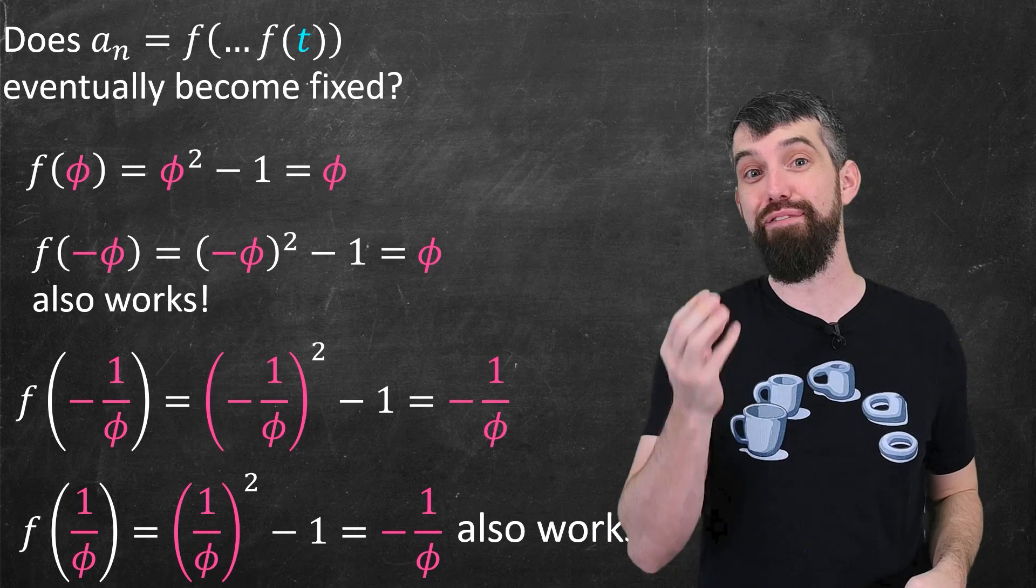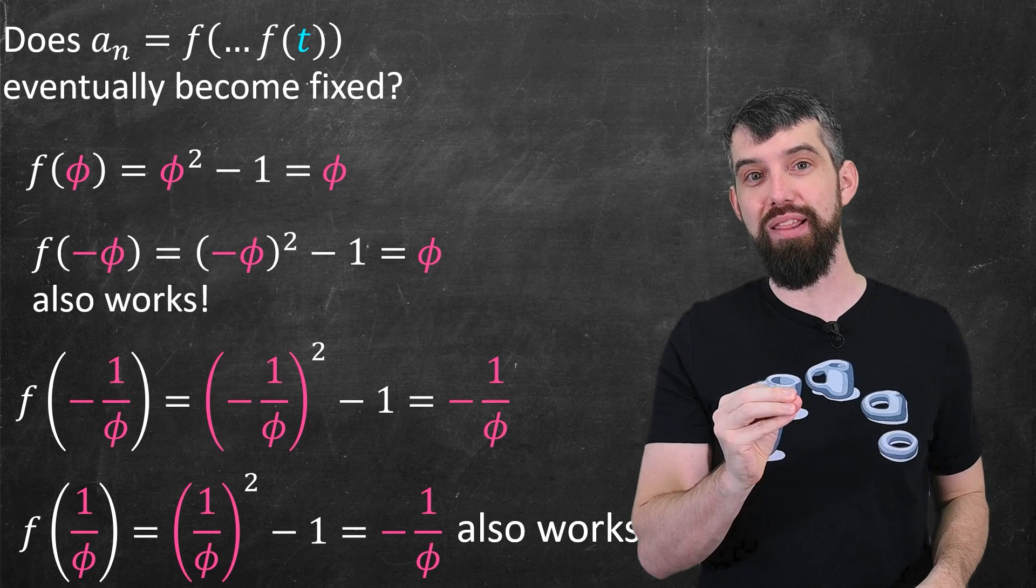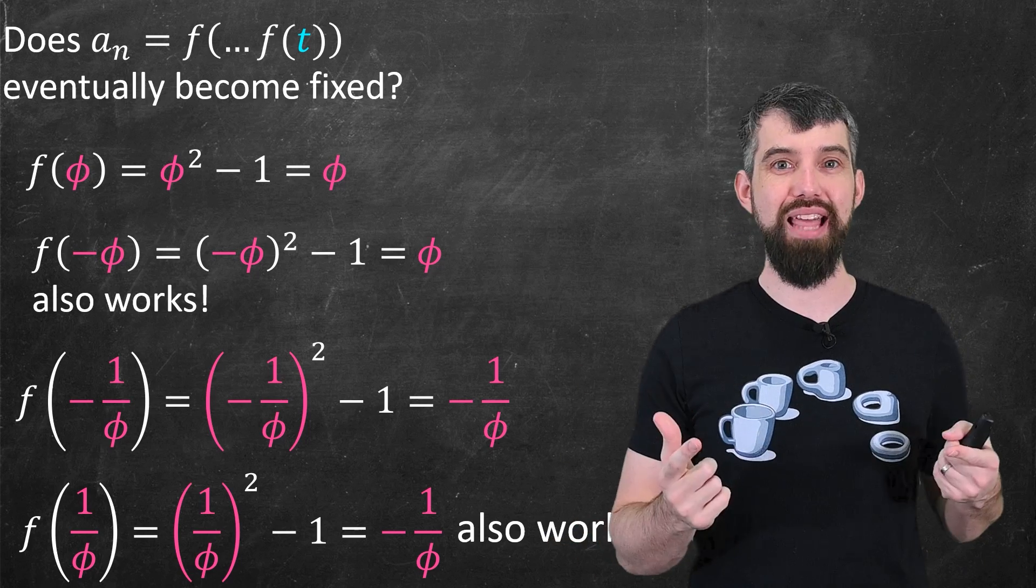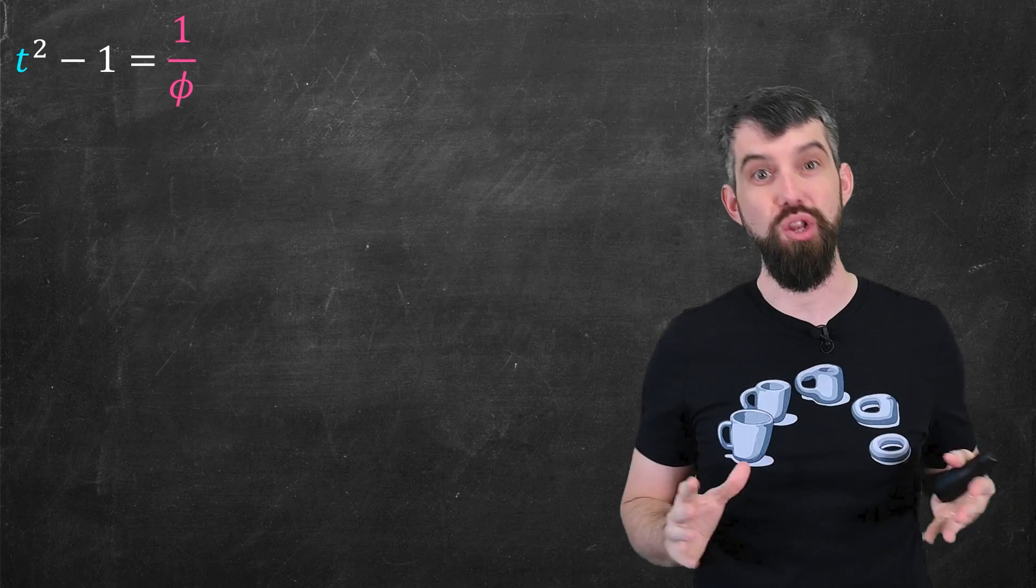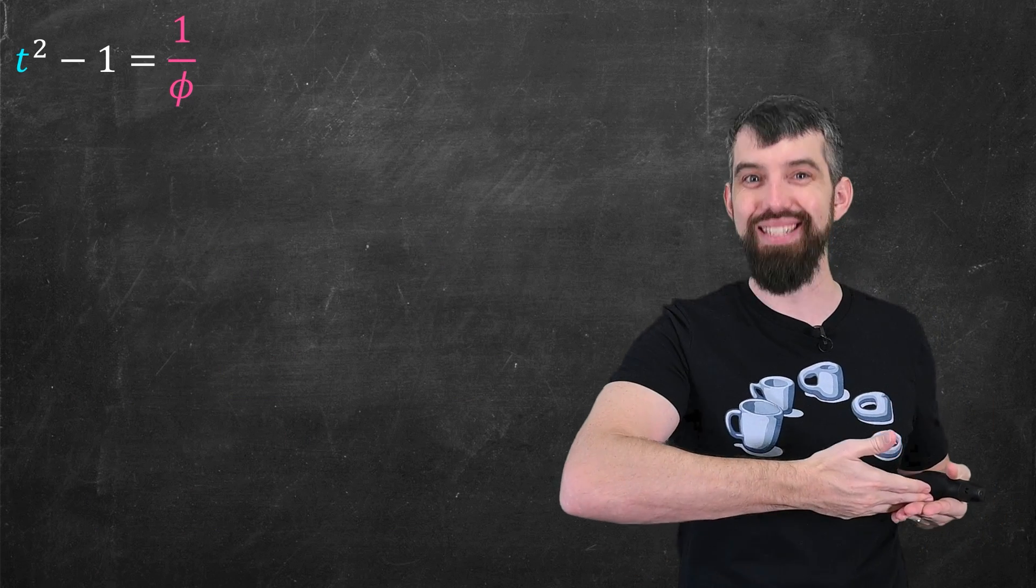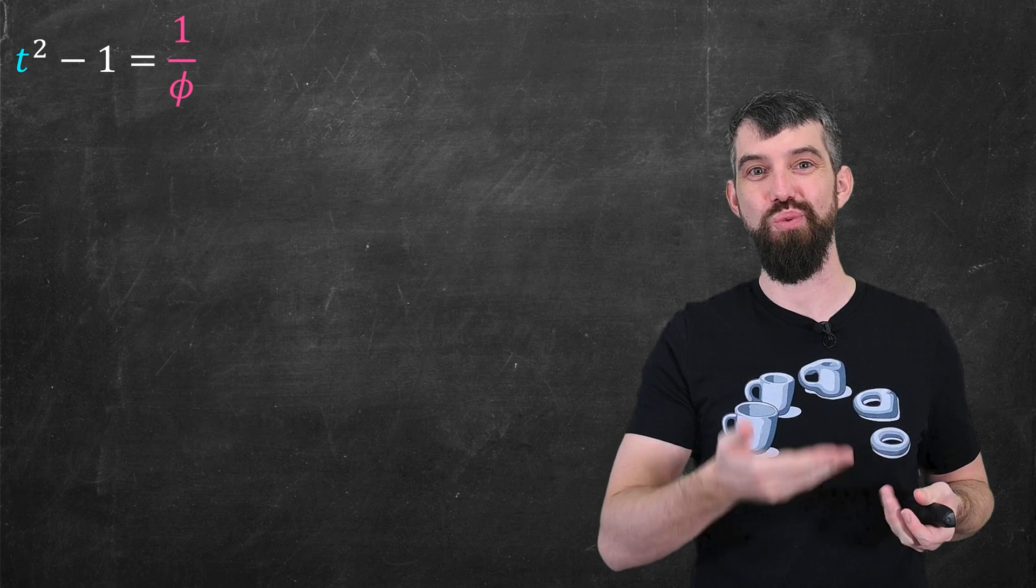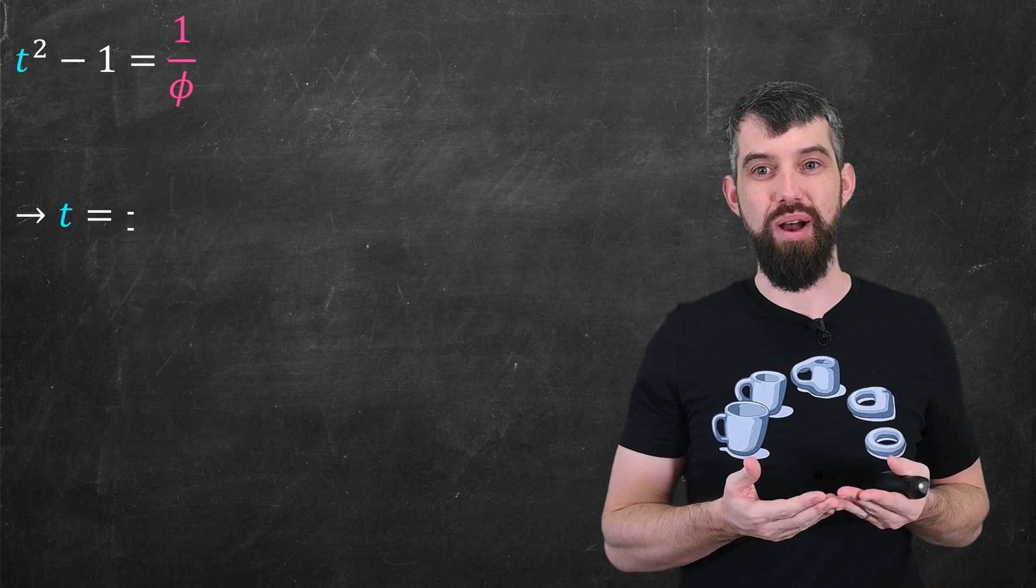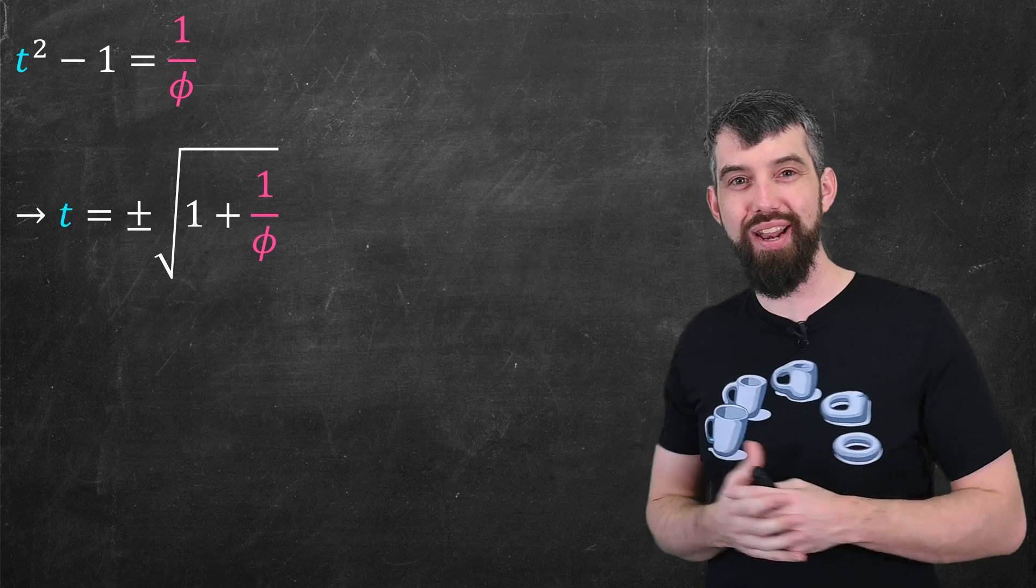Are there going to be more? Well, yes, in fact, there's going to be infinitely many that can be constructed in this way. Let's take that 1 over phi one, the new one that we have here. Okay, so I can ask the question, for what value of t does t squared minus 1 equal to 1 over phi? Well, this is quadratic, I can solve it, and I get this number. So now I've got two new points, where if you apply f you get to 1 over phi, which isn't a fixed point, but you apply f again, and you get to negative 1 over phi, which was one of our fixed points.